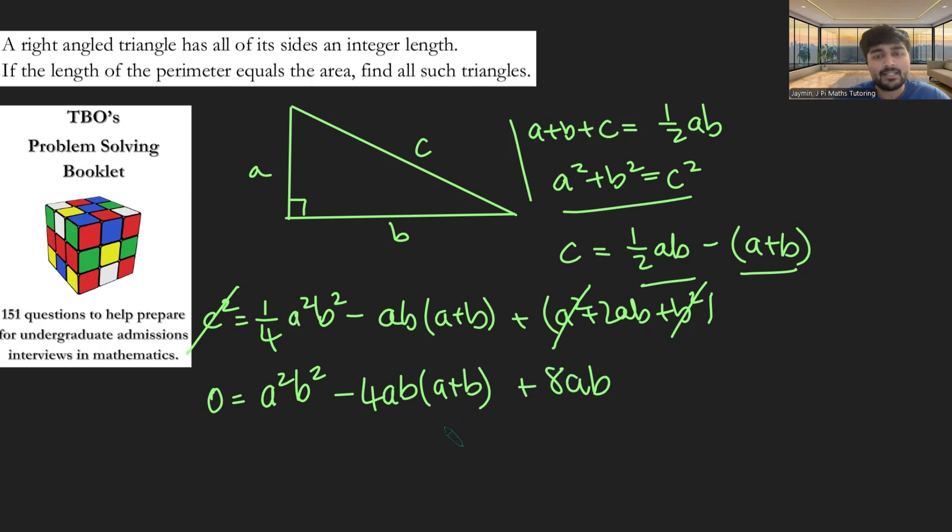And I noticed that everything on the right-hand side has a common factor of AB. Let's divide by that. So we get 0 equals AB minus 4 times A plus B plus 8, like so.